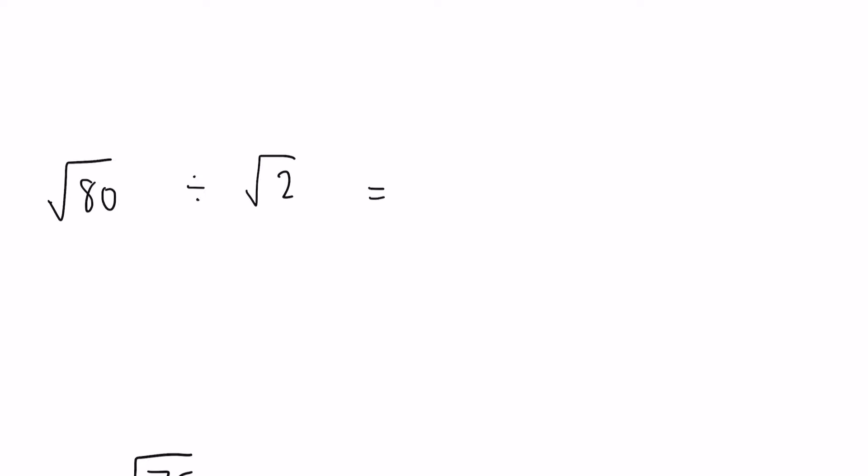Second one, we have the square root of 80 divided by the square root of 2. Now again, just by our division rules, 80 divided by 2 is going to be the square root of 40.